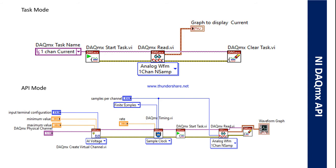After that, we'll select our timing mode — like one sample on demand, software dependency, finite sample, infinite sample — and then set the number of samples and sampling rate. We configure all those things: physical channel name, terminal configuration, minimum and maximum value, samples per channel, sampling rate, and timing inside this task.